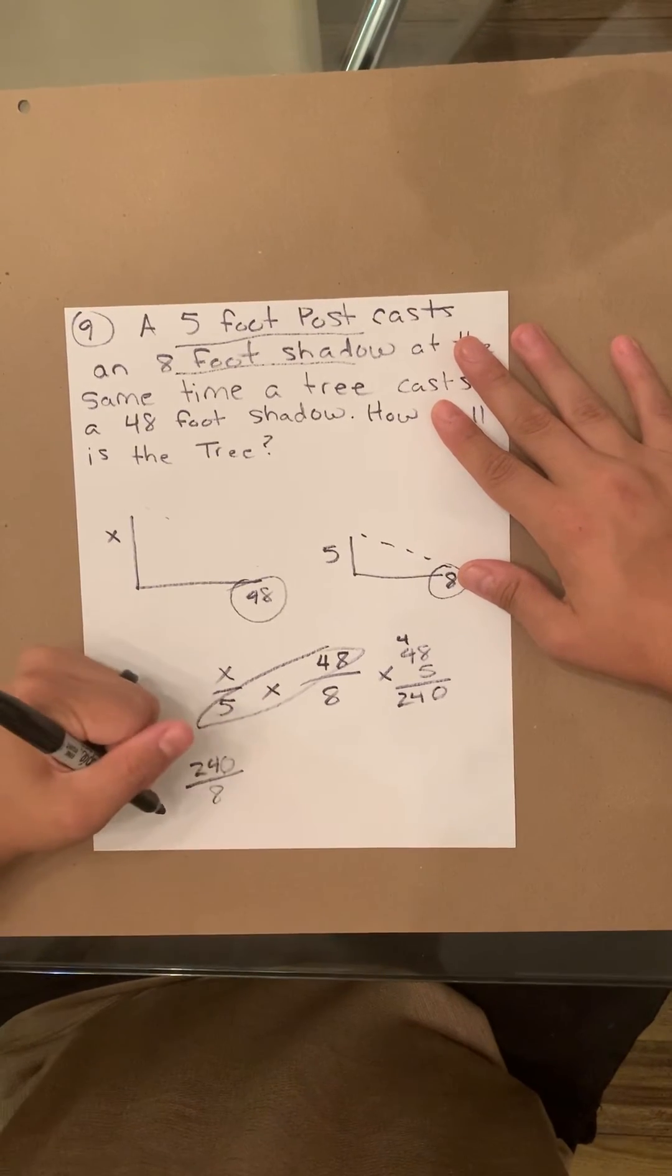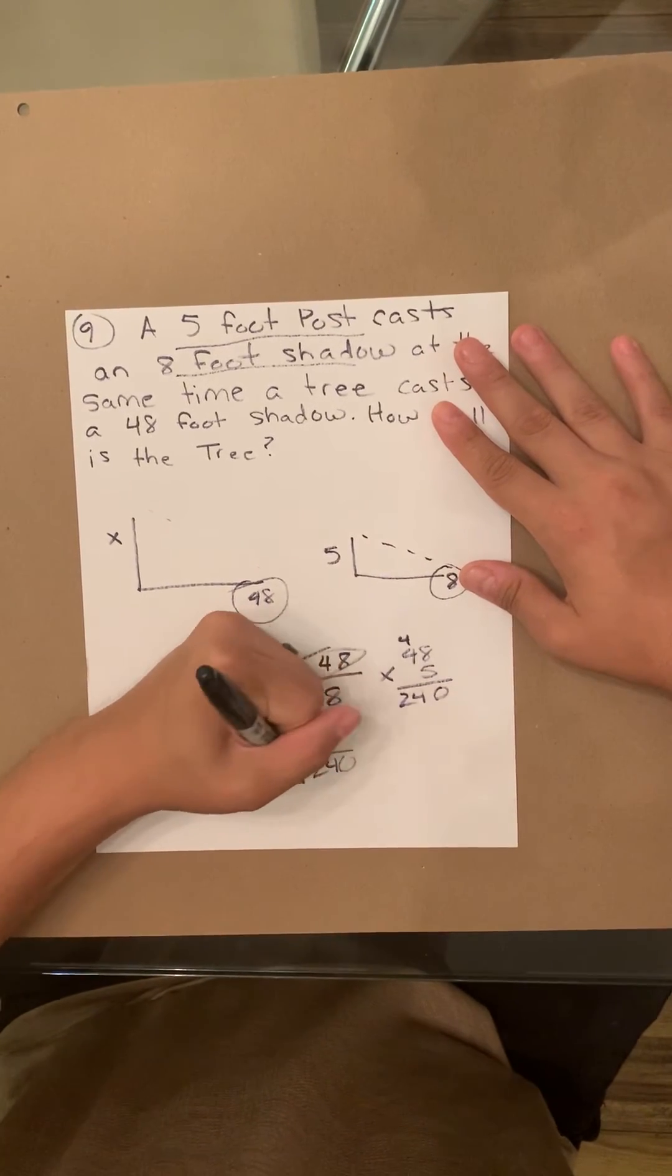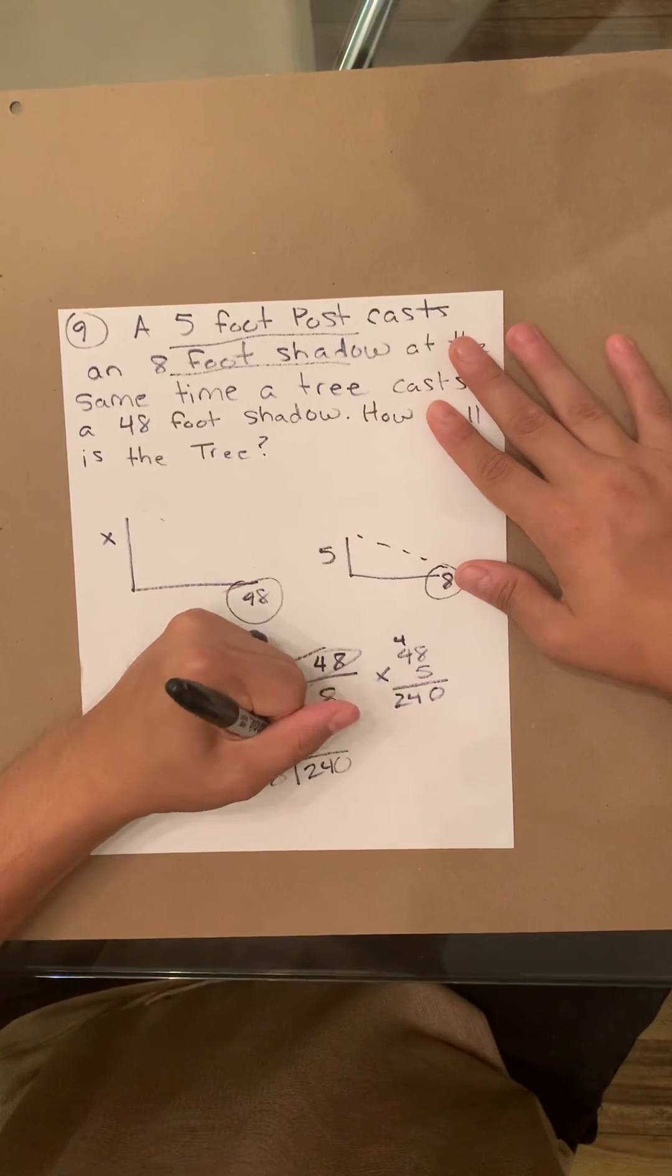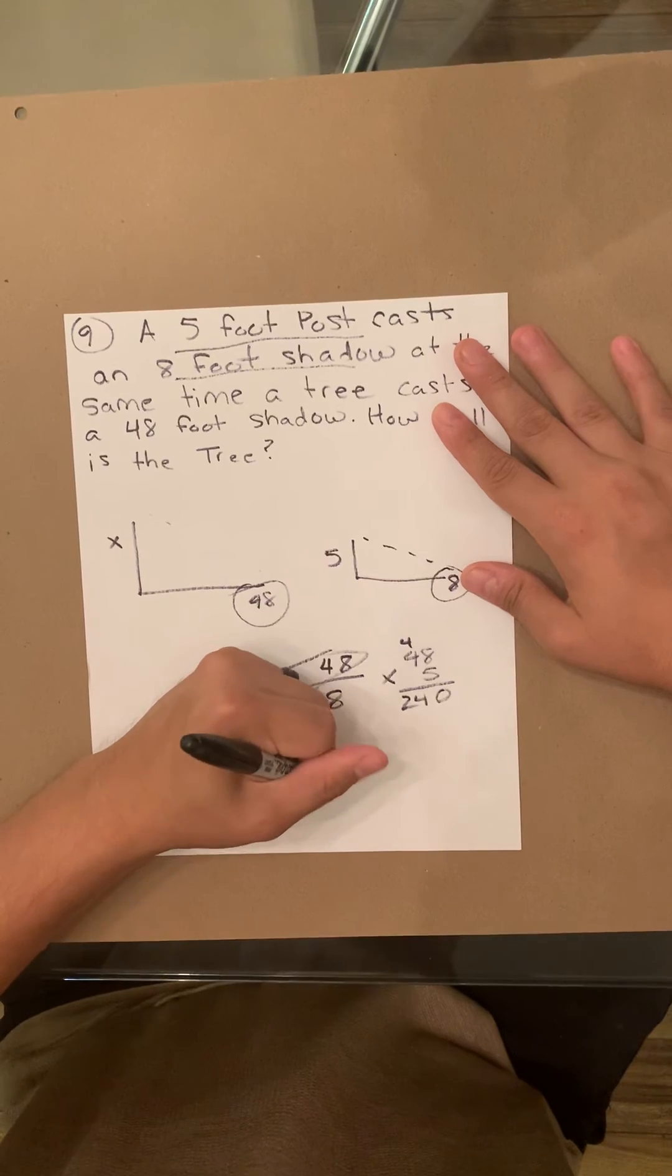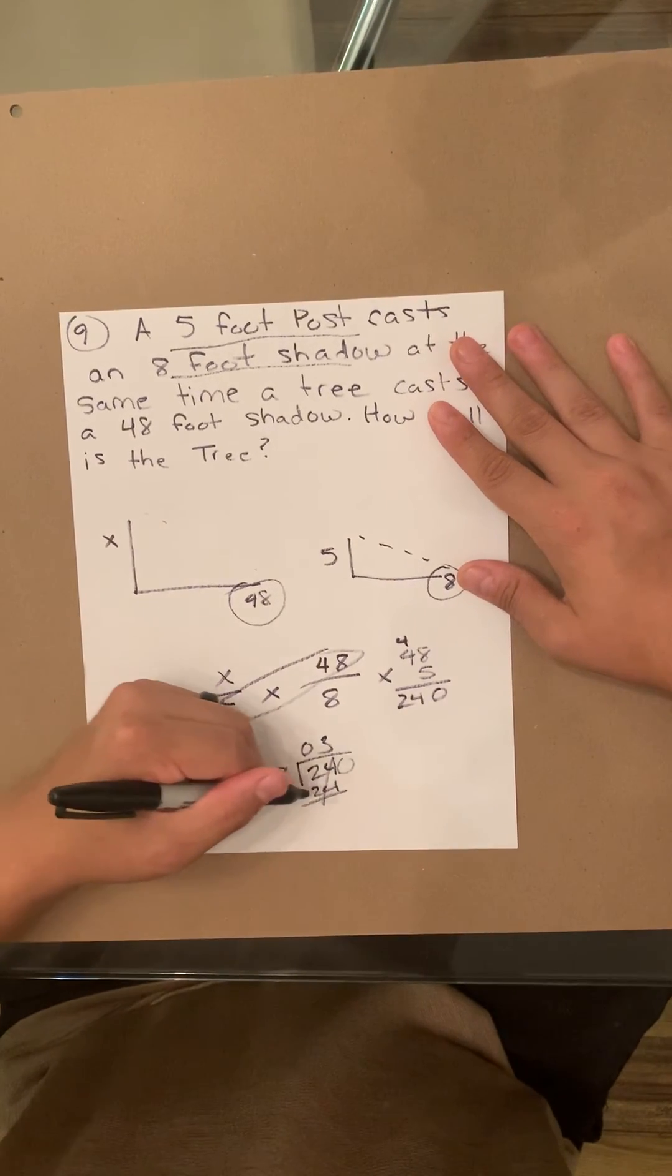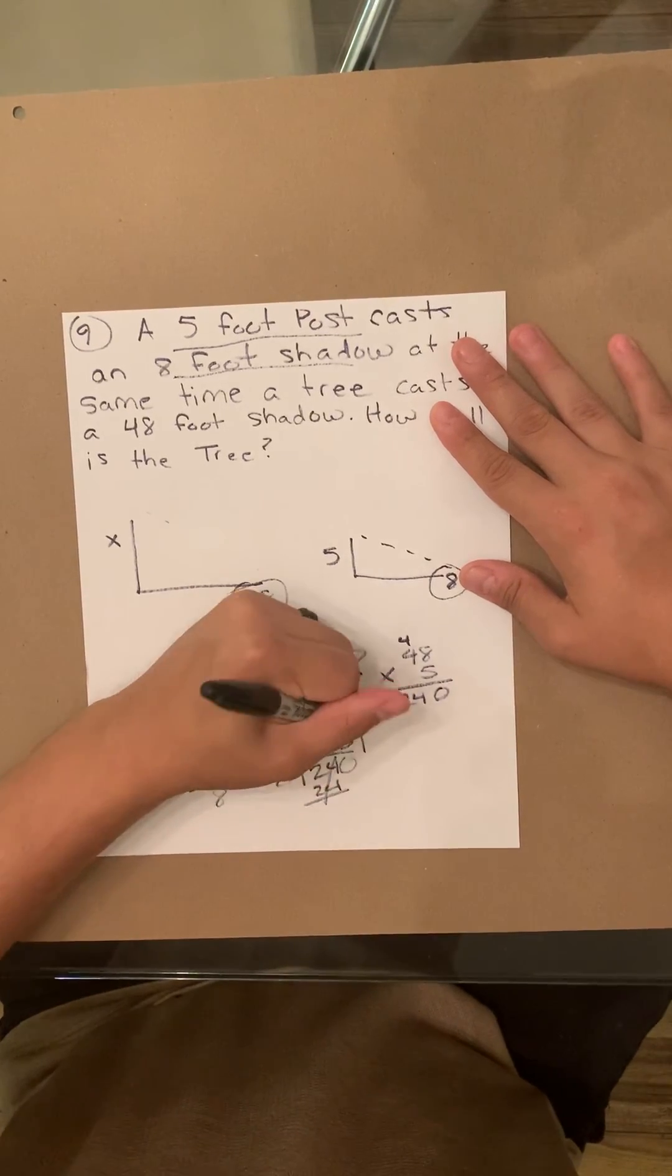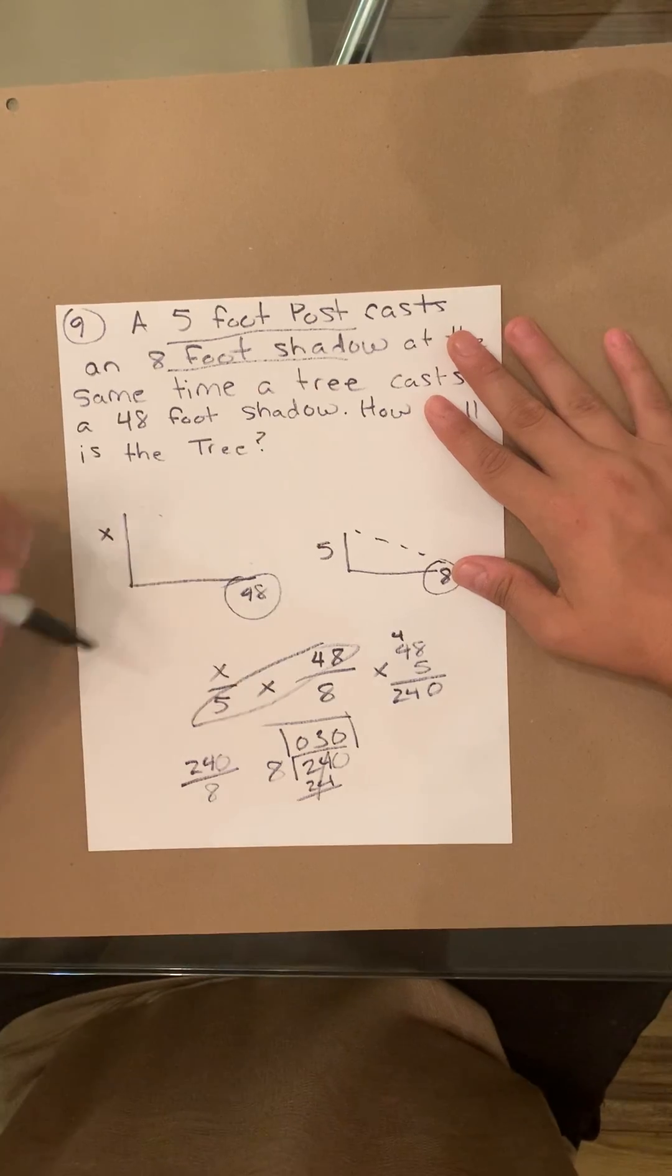So it's 240 over 8. We're going to turn that into division: 240 divided by 8. 8 can't go into 2, so we put 0. 8 can go into 24 three times. It'll be 24 minus 24. And then 8 can't go into 0, so it'll just be one more 0. So your answer is going to be 30. And that's how you do it.